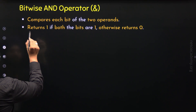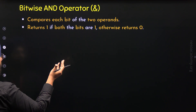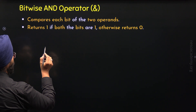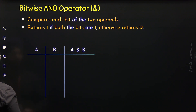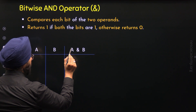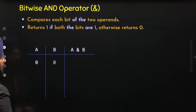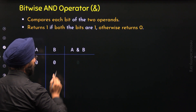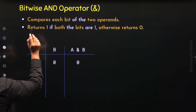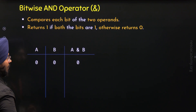We can observe that the Bitwise AND Operator returns 1 when both the bits are 1; otherwise it gives us 0. This can be understood from the truth table of the Bitwise AND Operator. I am assuming that a and b are single-bit operands and the Bitwise AND Operator is applied on these two operands. When a is 0 and b is 0, then Bitwise AND of a and b gives us 0, because both bits must be 1 to get a result of 1. Here both bits are 0, so we get 0.